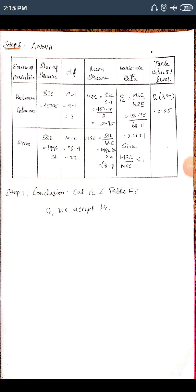For the variance ratio (F-test), we place the higher mean square in the numerator. Since MSC = 150.75 is higher than MSE = 68.11, we compute F = MSC / MSE = 150.75 / 68.11 = 2.21. If MSE / MSC gives a value less than 1, we do not use that ratio.